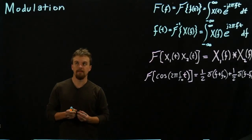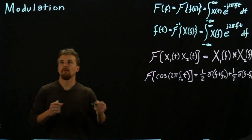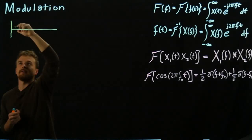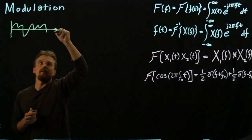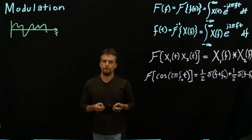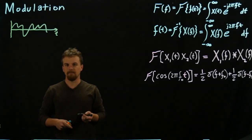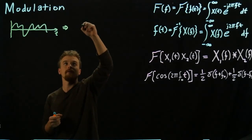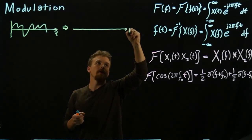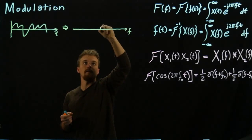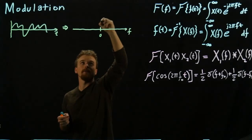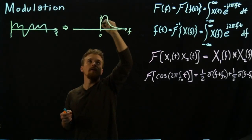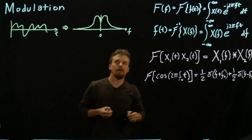Let's say we have some kind of time message that we want to transmit. It doesn't really matter what it looks like exactly. And let's say we know what the Fourier transform of this message looks like in the frequency domain. For this video, we don't need to solve for it — we'll assume we already know it, and let's say it looks something like this.